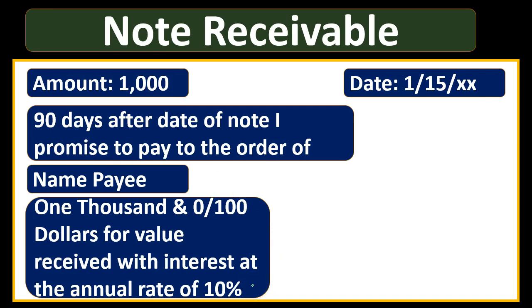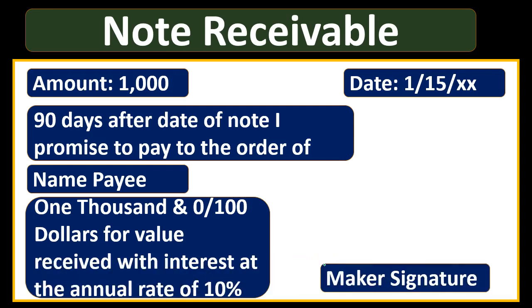Note that we don't have an official end date — we have 90 days from the date of the note, so we'll have to figure out when that will actually be. We also don't have the actual total amount we're going to get. We know we're going to get a thousand dollars — that's the sticker price — and then we have to figure out the 10% interest. The note often won't give you an amortization schedule or interest calculation, so you'll need to figure that out. Then we have the maker of the note — in our case, the customer, the one making this promise.